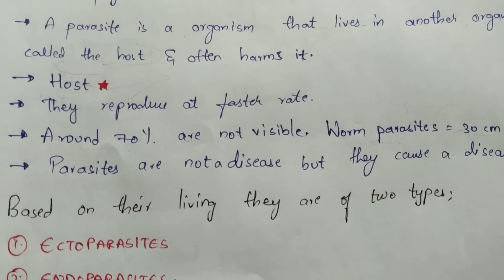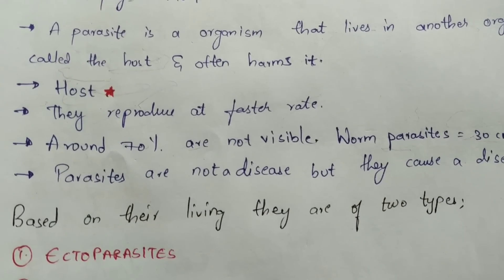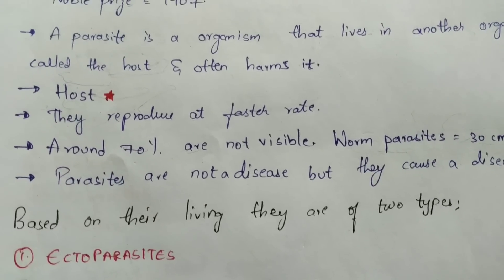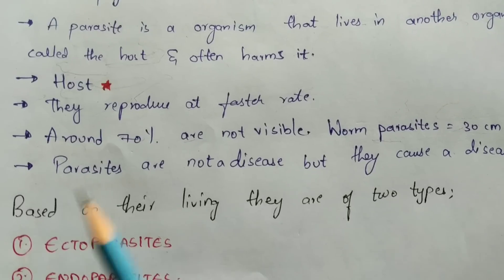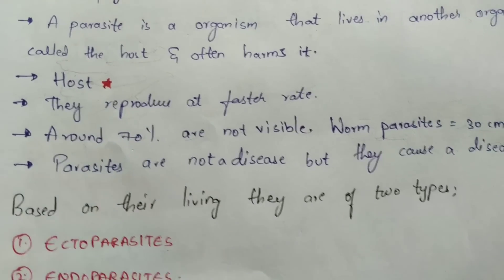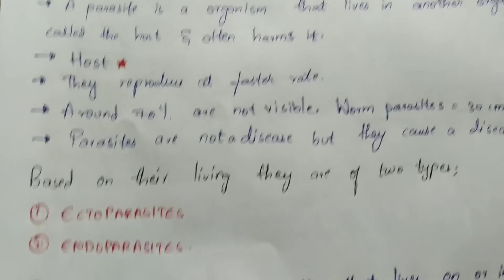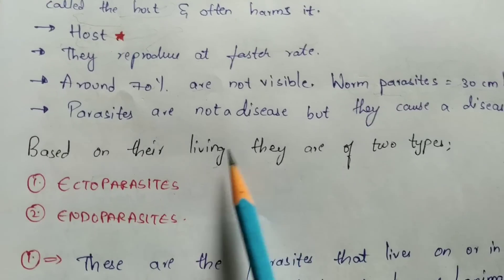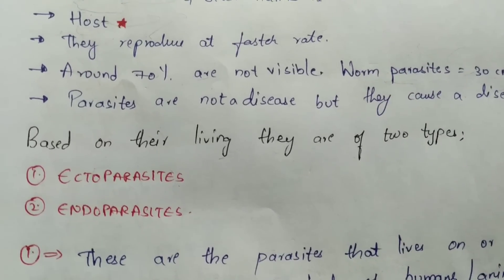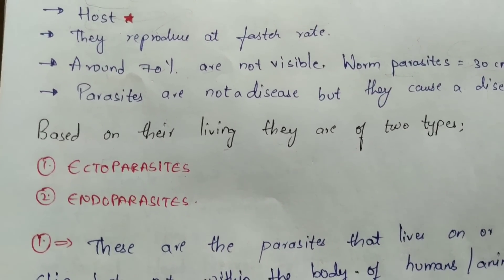Parasites are not a disease themselves, but they have the capacity to cause a disease. The type of disease they form depends upon the type of parasite. Based on their living location, parasites are of two types: ectoparasites and endoparasites.